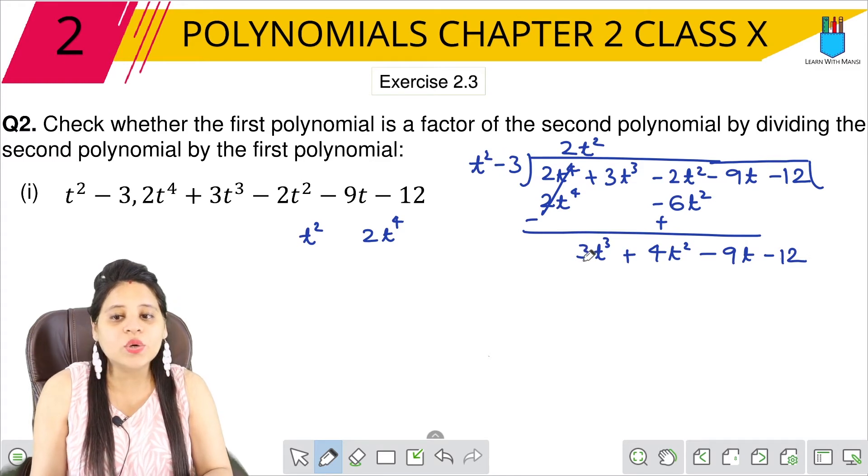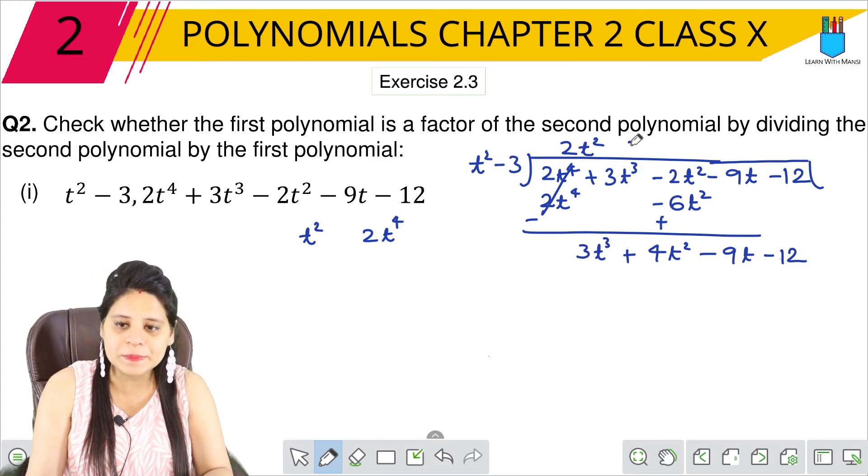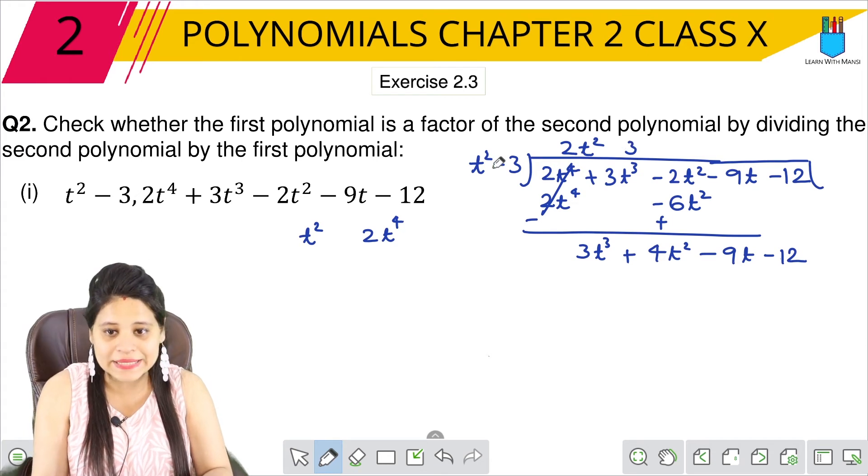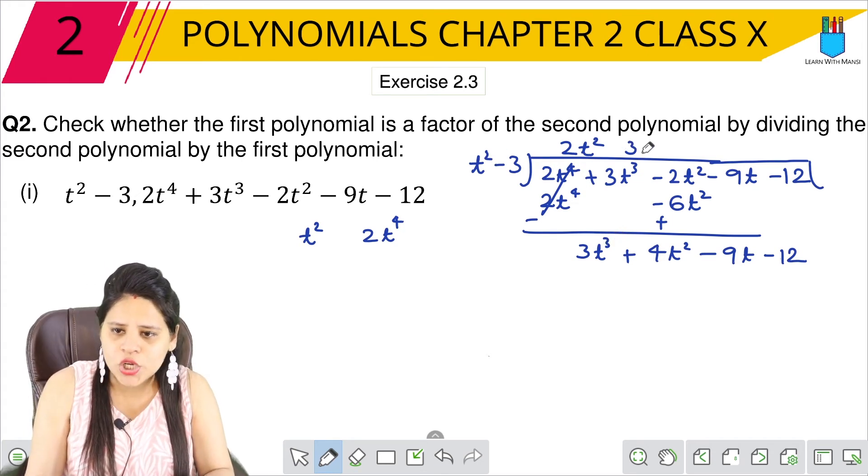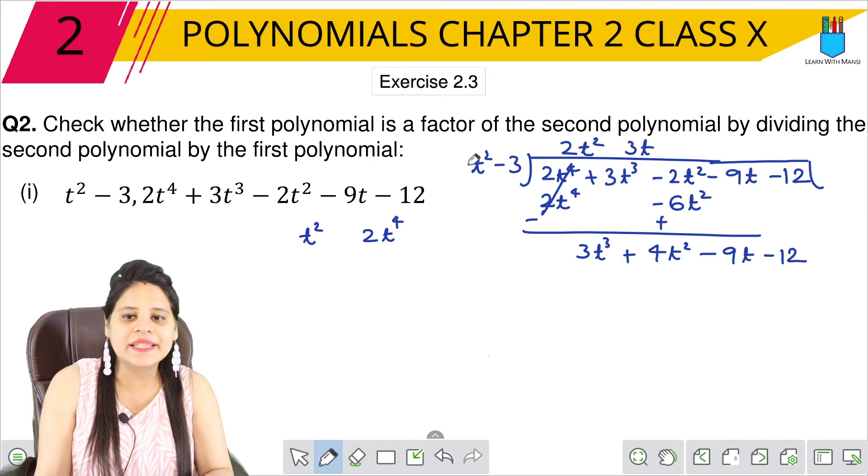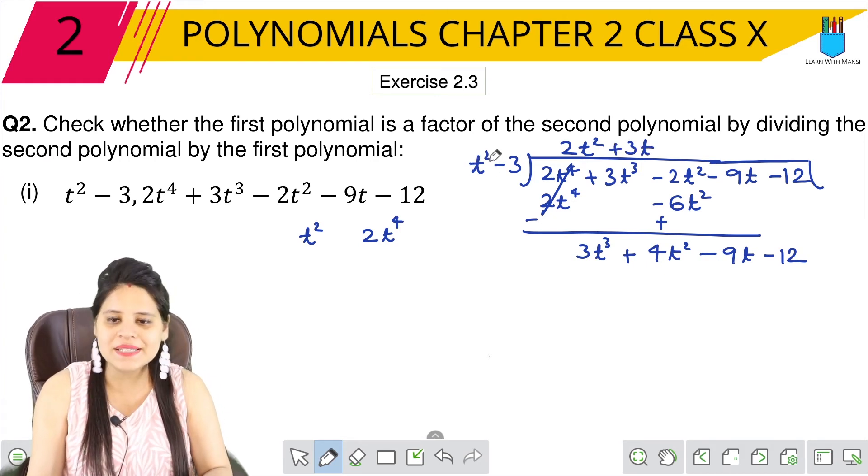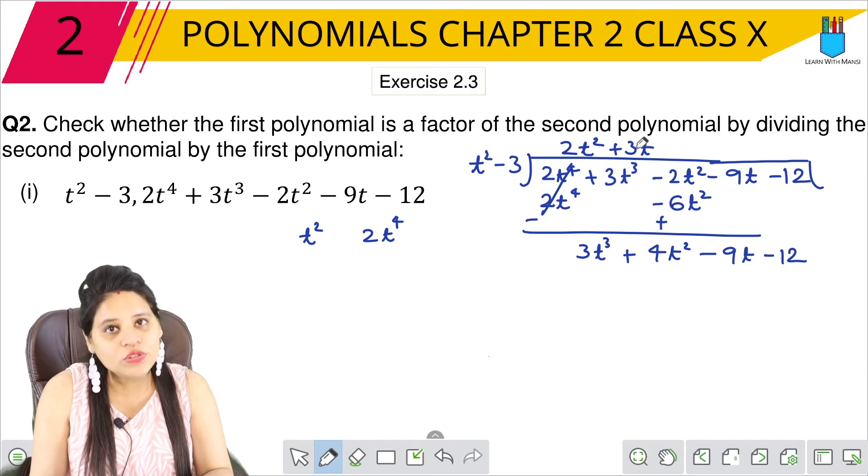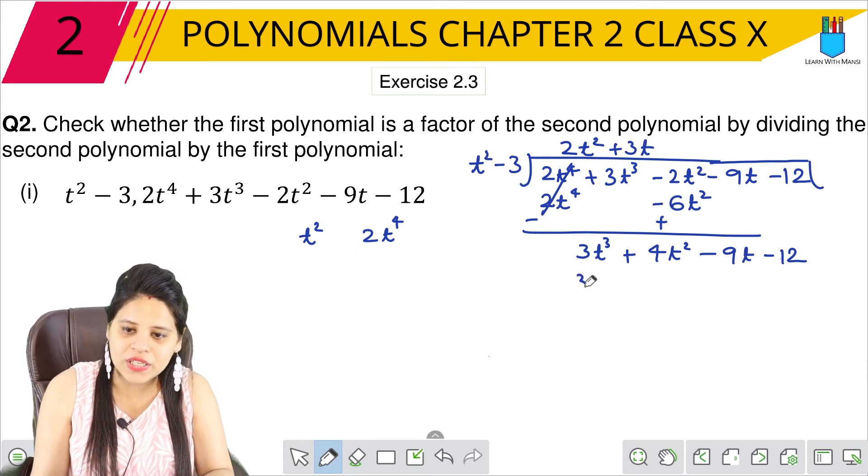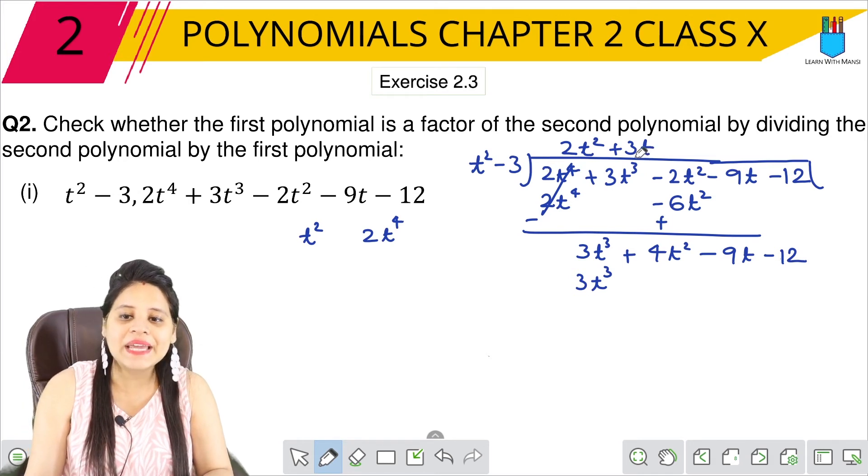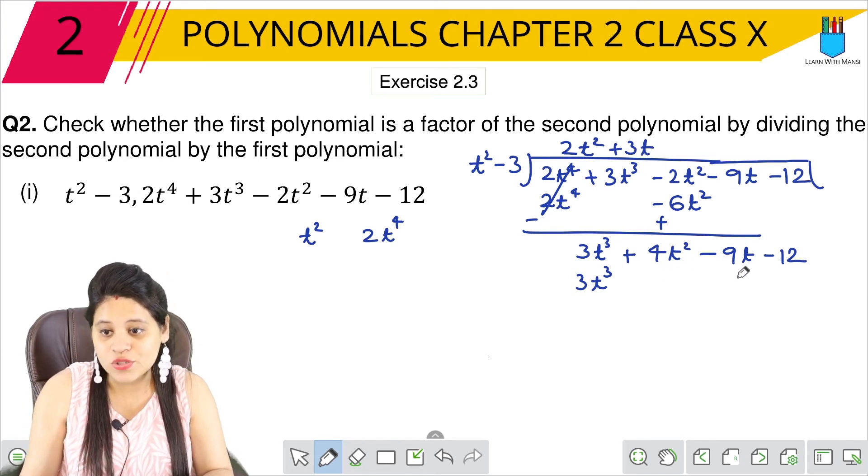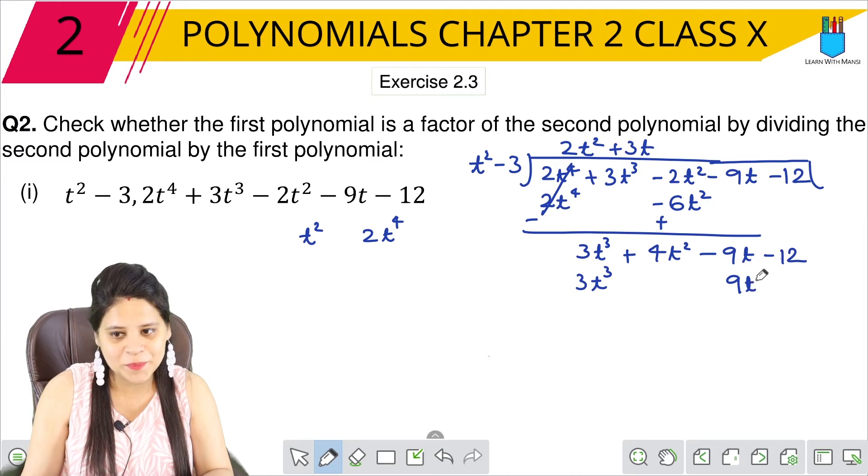Now make 3t³ to 3t³. We will multiply 3 with 1. We need 1t² to make t³, so here we have 3t. We will do 3t times t² which is 3t³. And t² times t is t³. Minus 3 times 3t is 9. And t times t is t², so 9t.